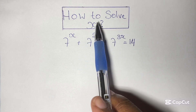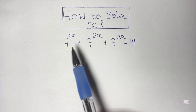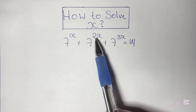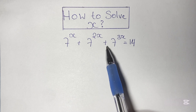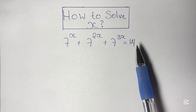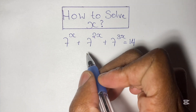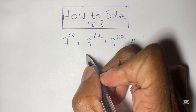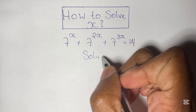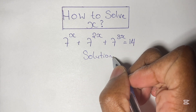Greetings again everyone, welcome back to my channel. Here we have another algebraic exponential equation that we are going to solve. In this equation we have 7 to the power of x, plus 7 to the power of 2 times x, plus 7 to the power of 3 times x, is equal to 14, and we are given to find the value of x.